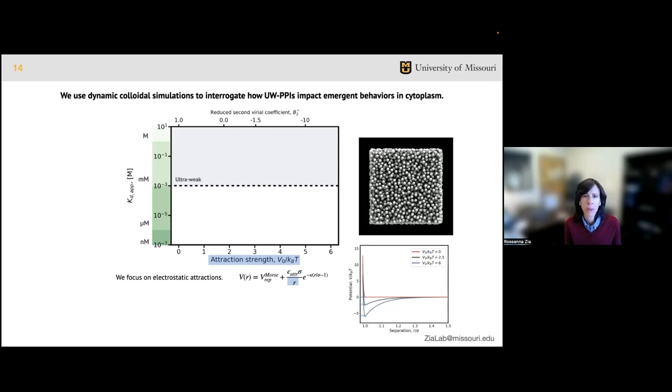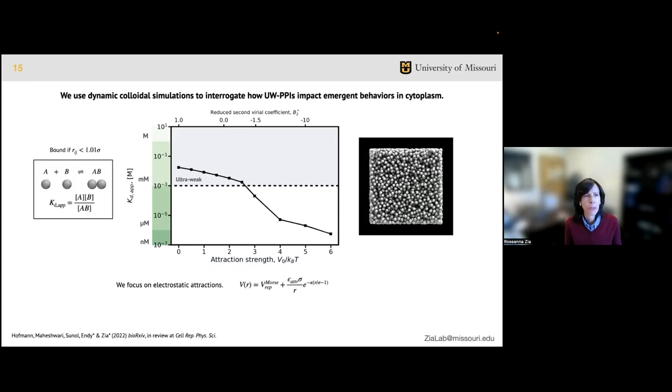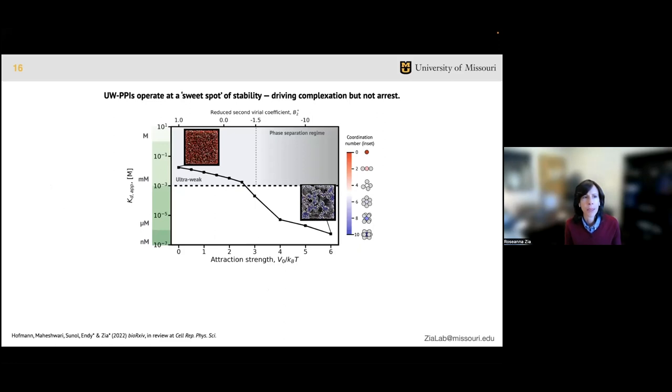Here we applied colloidal modeling to explore how ultra-weak PPIs alter emergent properties in the dense cytoplasm. We modeled interactions across a range of attraction strengths V0/kT on the x-axis, which corresponds to the depth of the interaction potential at particle contact. The form of the potential captures both entropic exclusion - particles cannot overlap - and an electrostatic attraction, which we choose as a model protein-protein interaction. The kappa parameter is the inverse of the Debye screening length that controls the range of the interaction, set by the ion concentration in prokaryotic cytoplasm.